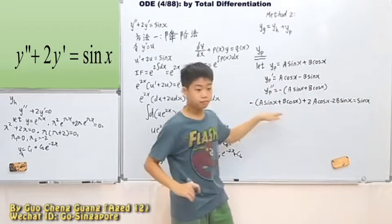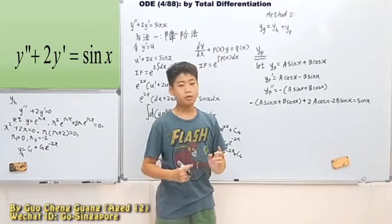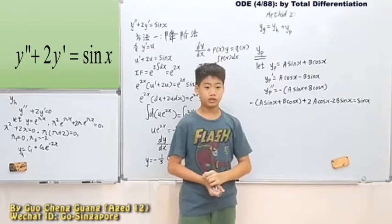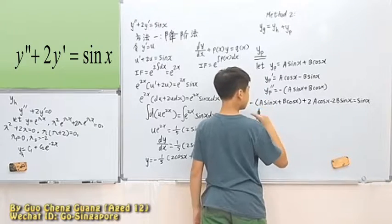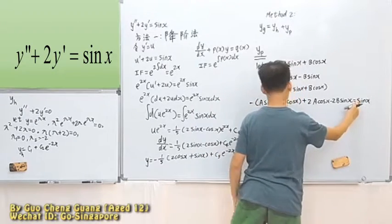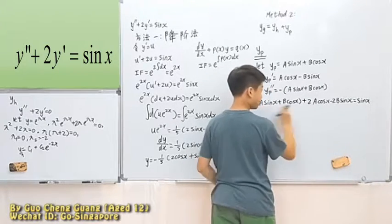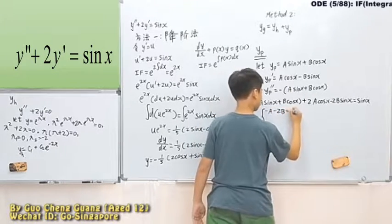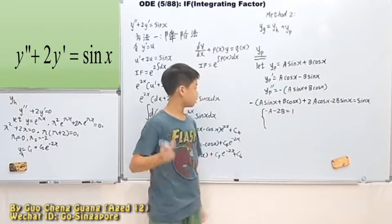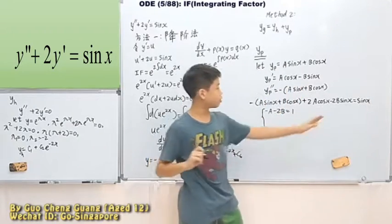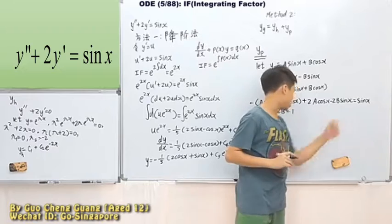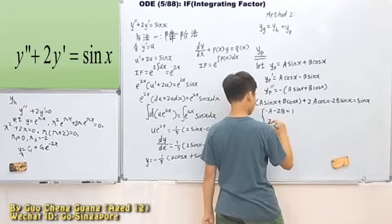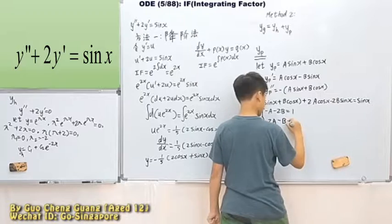So, with all of these, we can go and find a and b. You can call this by comparing coefficients or you can say determining the coefficients. So, sine here, coefficient is 1. What do we have? We have negative a, we have negative 2b. That means negative a minus 2b is 1.